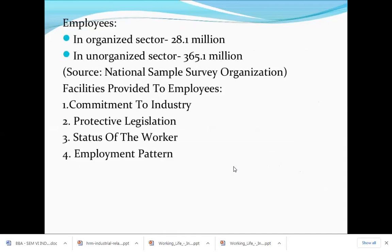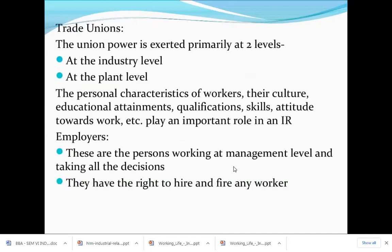In terms of facilities provided to employees — in an organised sector there are a certain number of employees, and in the unorganised sector there are others. Facilities include commitment to industry, protective legislation, status of workers, employment partnership, and more. These are the kinds of facilities provided to employees. Next is the trade union.